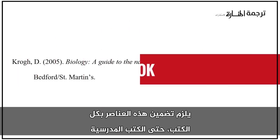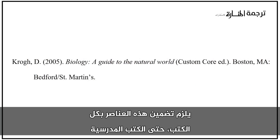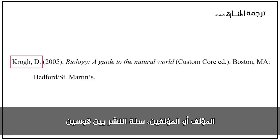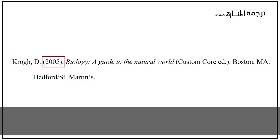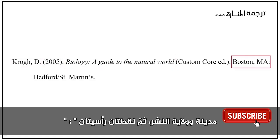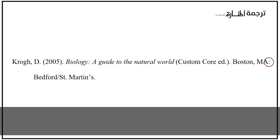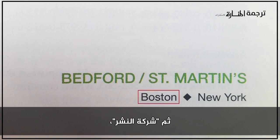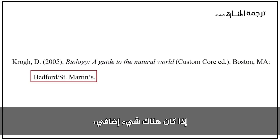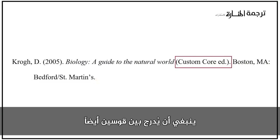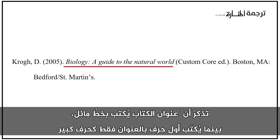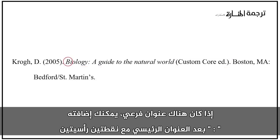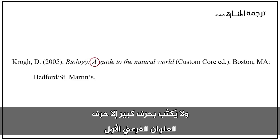When referencing a book, including textbooks for class, you need to include these elements: the author or authors, the year of publication in parentheses, the title in italics, the publication city and state followed by a colon — if there is more than one location listed, just use the first one — and then the publishing company, ending with a period. If there is an edition provided, that should be included in parentheses. Remember, the title of a book is italicized and only the first letter of the title should be capitalized. If there is a subtitle, add it after the main title with a colon, and only the first letter of the subtitle should be capitalized.